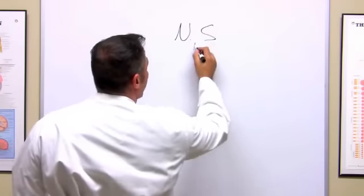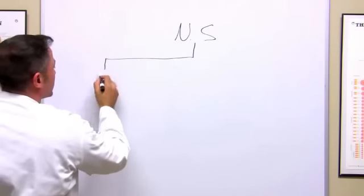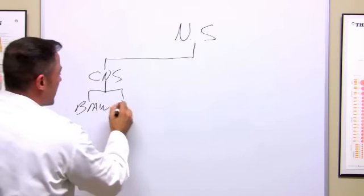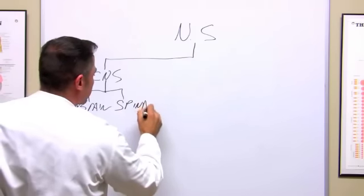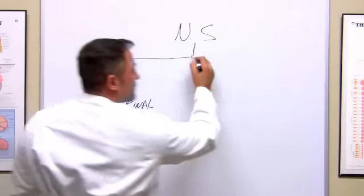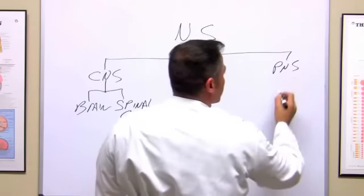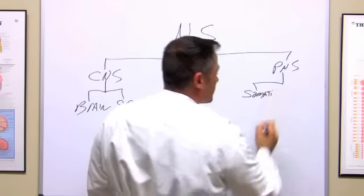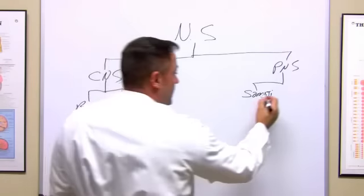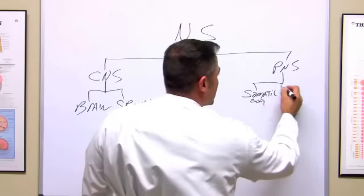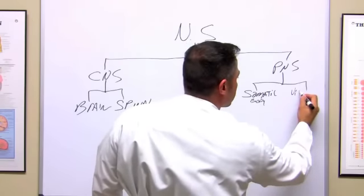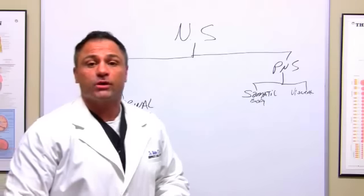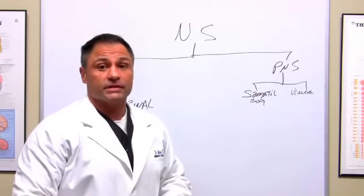The nervous system is comprised of two parts. You have the central nervous system which is comprised of brain and spinal cord. And you have the peripheral nervous system. That is made up of the somatic, which is body. The somatic means body. And the visceral. This is the area of the spine, of the nervous system we're going to talk about today. Peripheral nervous system.